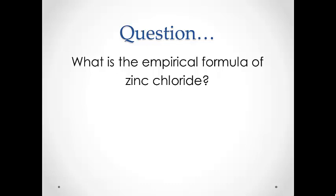Now that we have talked a bit about chemical formulas, we would like to know more about how those formulas are determined. An empirical formula is the simplest whole number ratio of any two or more elements combined together. For example, water is H2O, and that simply means that hydrogen and oxygen combine in a 2 to 1 ratio to form that compound. In this lab, we will determine the empirical formula of zinc chloride.